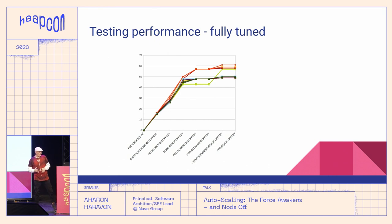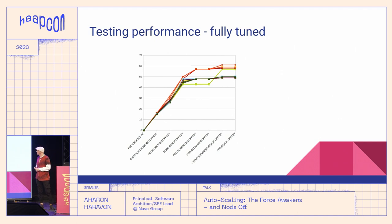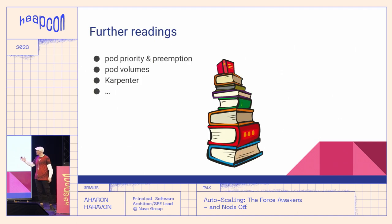So I fine-tuned all the parameters I mentioned earlier, also used the warm pools feature, and even pre-pulled all the container images. I achieved exactly the 60-second target, saving an enormous amount of money for the company because we no longer need to keep expensive headroom doing nothing. I hope this inspires you to also fine-tune your own autoscaling setups.